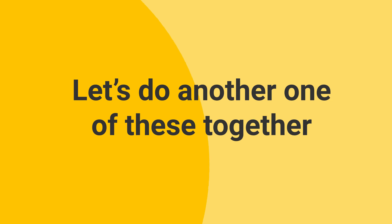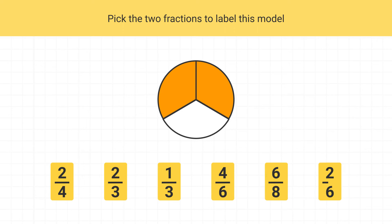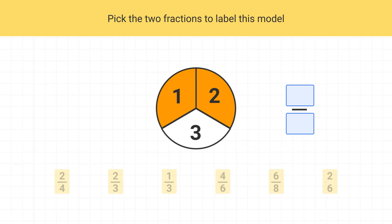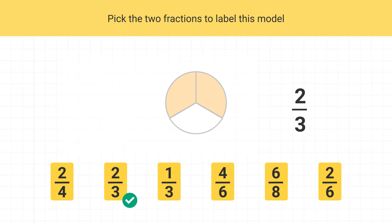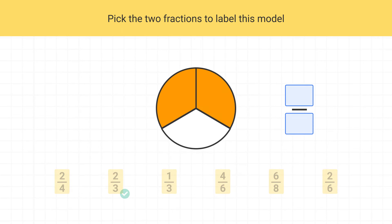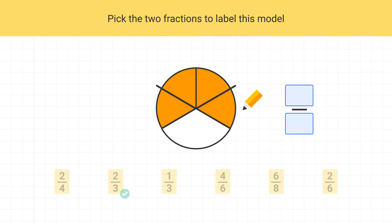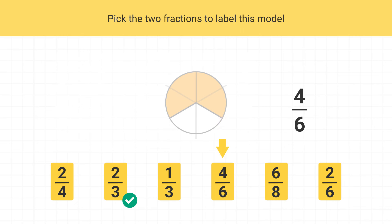Let's do another one of these together. This problem is just like the other ones, but we're going to pick two fractions from this list. First, let's label the model as we see it. There are two shaded pieces out of a total of three, so this is the fraction two-thirds. We can go and find two-thirds in our list of fractions and mark it off as correct. Now to find the next fraction, we have to create an equivalent fraction. Here we've split each piece into two smaller pieces. This is now the fraction four-sixths, so we'll find four-sixths in our list of fractions and mark it off as correct.